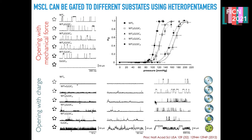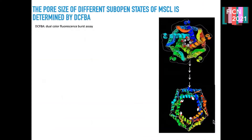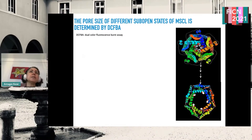This gave us a tool to play with the hydrophobic gate one subunit at a time — we can charge it as we like. This means we can now observe conformational changes. We also used the dual-color fluorescence burst assay to see how big the pore is if you activate the hydrophobic gate with only one charge versus all five charges.